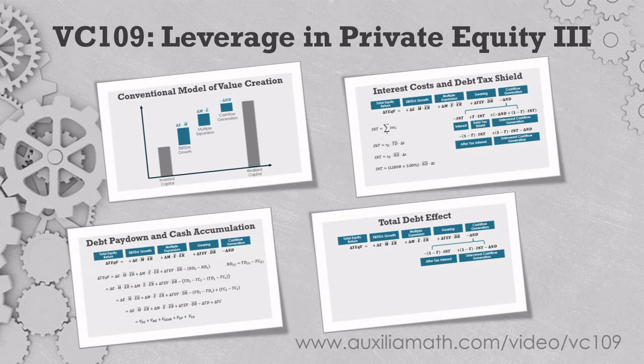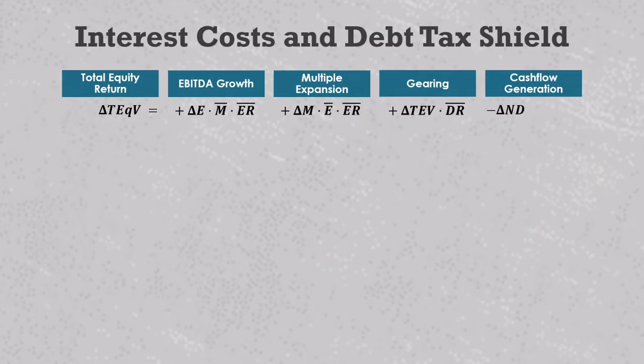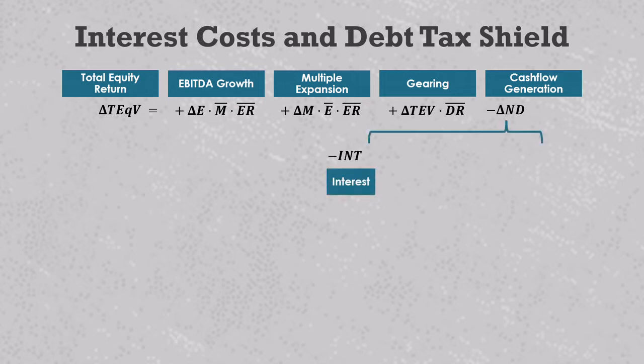You can work the interest cost and the debt tax shield into the model in the same way. You start with a levered company and make a hypothetical assumption about what would have happened if there had been no debt. In the hypothetical scenario, interest costs could have either been distributed to shareholders during the holding period or accumulated on the company's balance sheet and distributed when the company is eventually sold. This makes interest cost a negative value driver.